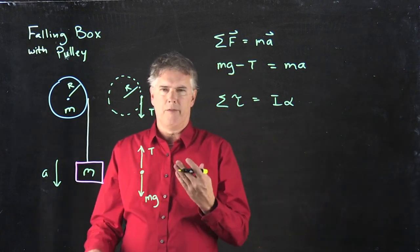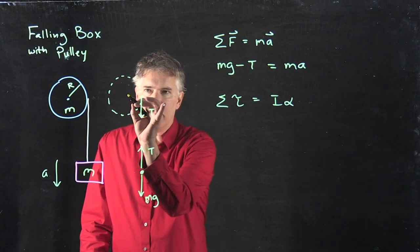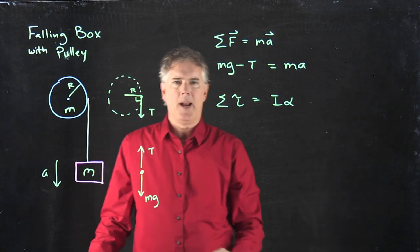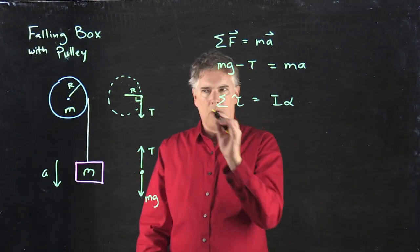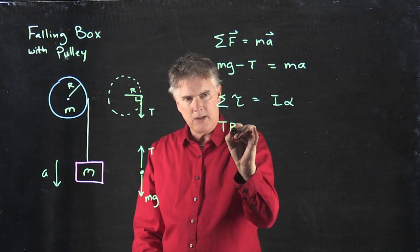Torque is equal to force times lever arm. In this case, the lever arm is just the radius since this thing is acting at a right angle. So the left side of this equation just becomes tension times R.